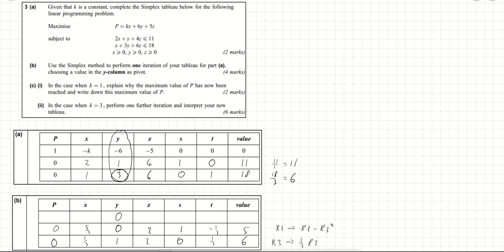We do something similar to row 1. We currently have minus 6 in the y column, so we replace row 1 with row 1 plus 6 times the new row 3. In the p column: 1 plus 0 is 1. In the x column: 6 times one-third is 2, added to minus k gives 2 minus k. In the z column: minus 5 plus 6 times 2 gives 7. In the s column: 0 plus 0 is 0. In the t column: 0 plus 6 times one-third is 2. The value becomes 0 plus 6 times 6 is 36. That completes the first iteration.